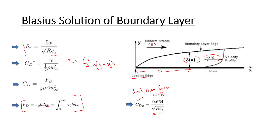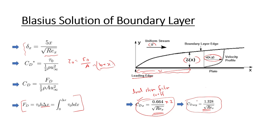If you need to find the average coefficient of drag, or average skin friction coefficient, up to x for the whole area, the formula is 1.328 divided by the square root of Re_x — that is, if you multiply the local value by 2, you get this answer. So you can find both the average skin friction coefficient and the local skin friction coefficient. These are the important Blasius solution formulas to remember: boundary layer thickness delta(x), local drag coefficient 0.664/√(Re_x), and average drag coefficient 1.328/√(Re_x).